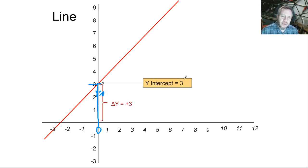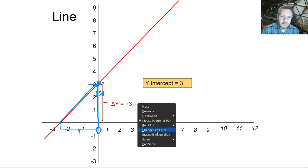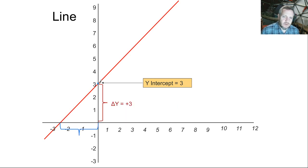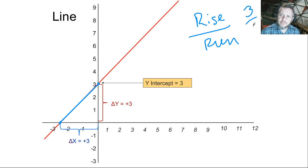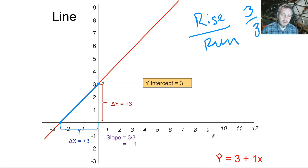Rise over run. You take the change in y for two points and divide that by the change in x. The change in y is 3, the change in x is 3, so 3 divided by 3 equals 1. The slope is 1, and our y-intercept is 3. So our model would be: y-hat equals 3 plus 1x, or 1x plus 3, whichever way you want to write it. Keep in mind this is just our theoretical model formed from data. In statistics we don't just have the line — we got the line by calculating some stuff from some dots that are all over the place.